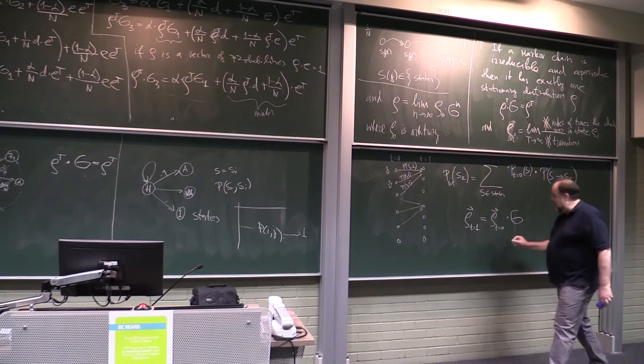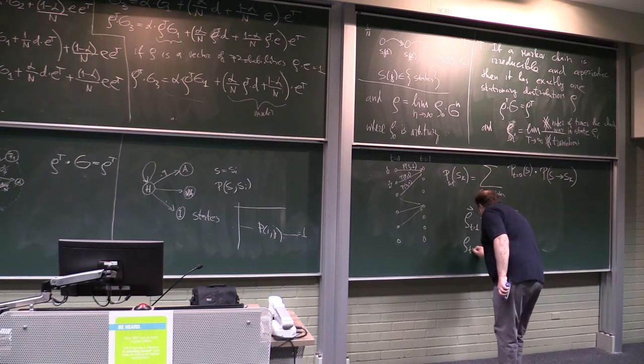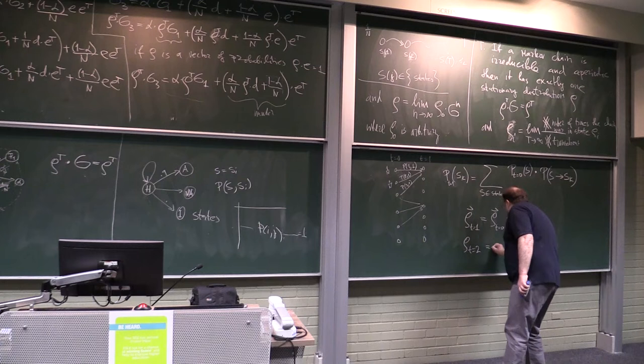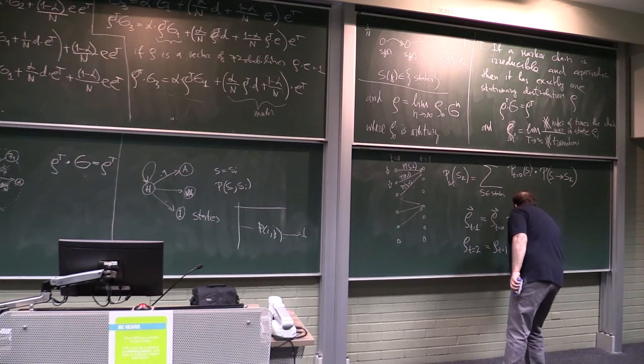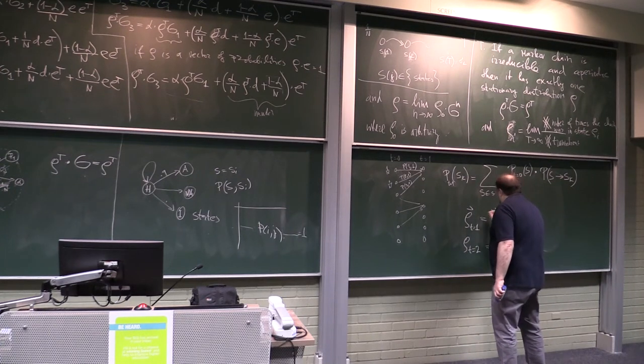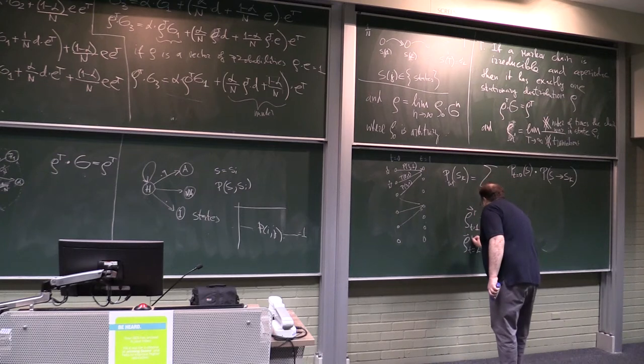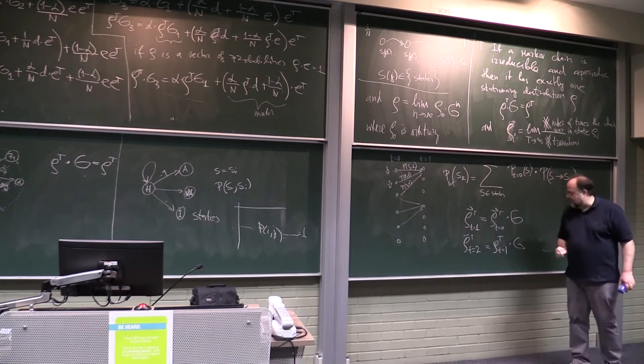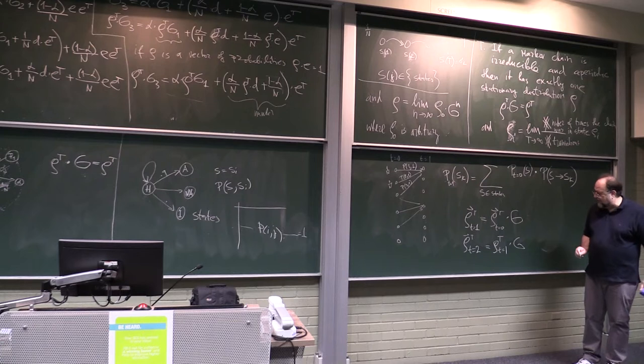But then, in the same way, I get that ρ when t equals to 2 is equal to ρ t equals to 1 times g. Do you understand this? Because the same logic applies.